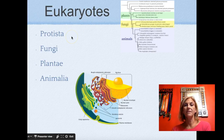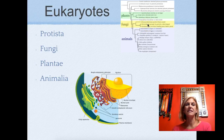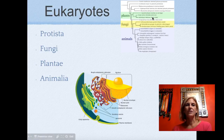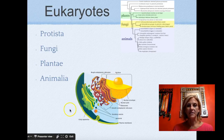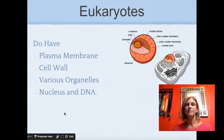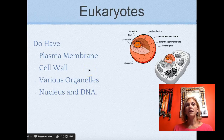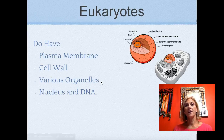The eukaryotes include all our other kingdoms: the Protista — that's protozoans and protists like algae — the Fungi, which includes mushrooms, molds, and yeast, the Plantae with bushes, grasses, flowers, and trees, and Animalia. The eukaryotes have a plasma membrane, may have a cell wall, have a number of different organelles, a nucleus, and DNA. Organelles common to all eukaryotes include endoplasmic reticulum, mitochondria, ribosomes, and a nucleus.